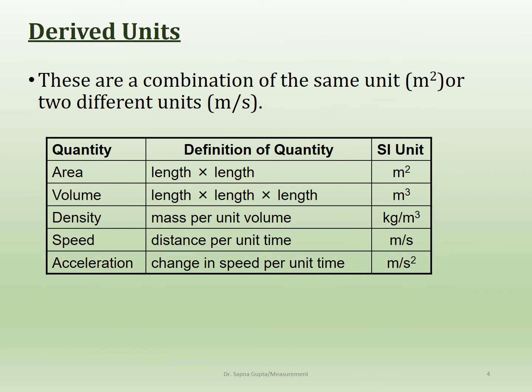Derived units are units formed from a combination of two or more units — also known as secondary units. For example, area requires multiplying two units together, and volume requires multiplying three units together.